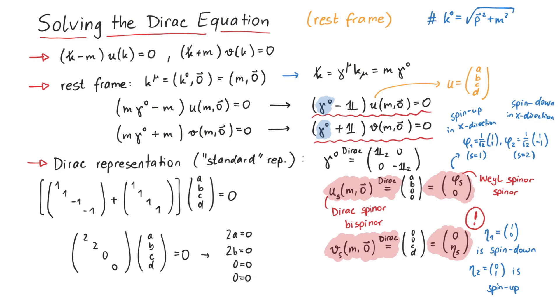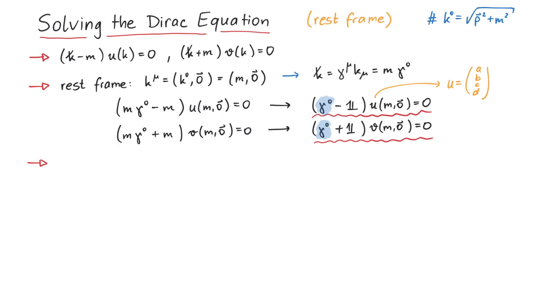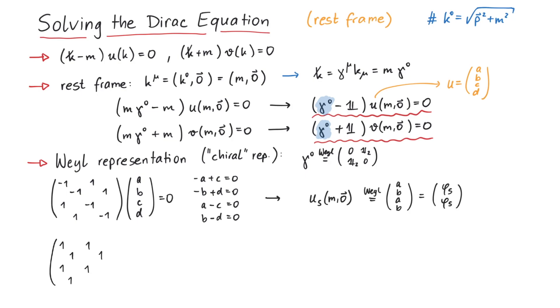So far, we've been talking about the Dirac representation of the gamma matrices. However, there is also another widely used representation, called the Weyl representation, or chiral representation. Here, gamma zero looks like this. After performing similar steps, we get to the result that the bispinner u in the Weyl representation reads phi s phi s, and the bispinner v is eta s minus eta s.